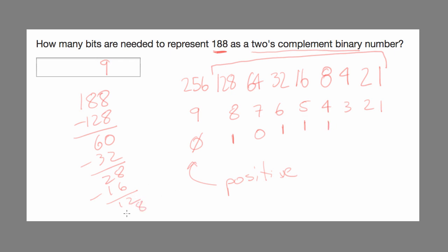We'll set the 8-bit, and that leaves 4. So we'll set the 4-bit, and we won't set the 2 and 1-bit. So there's the two's complement representation, the smallest two's complement representation of 188, and we can see that fits in 9 bits.